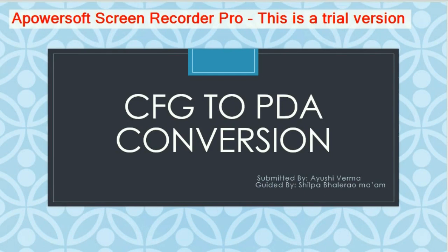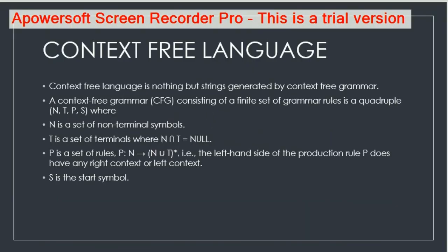Context-free language is nothing but a set of strings generated by context-free grammar. Grammar consists of four tuples: N, T, P, and S. N is the set of non-terminals, T is the set of terminals, P is the production rule, and S is the start symbol.